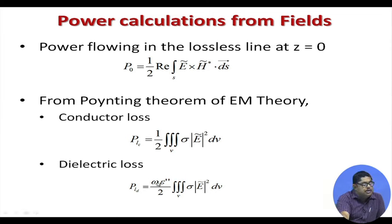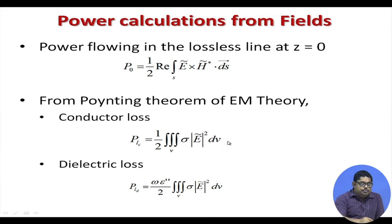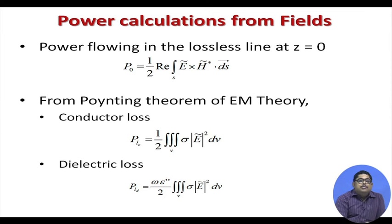Similarly, dielectric loss is given by (ω ε″/2)∫|E|²dV, where ε″ is the imaginary part of the complex dielectric constant. This imaginary part contains the conductivity of the dielectric, which is the culprit for dielectric loss: it gives rise to the term ω × ε″ × σ.